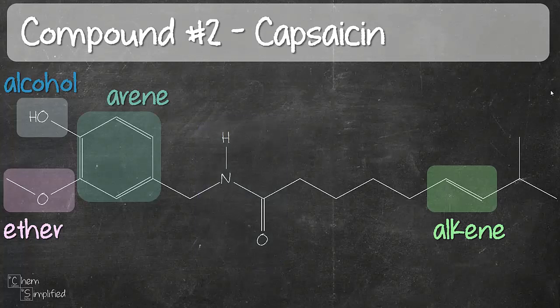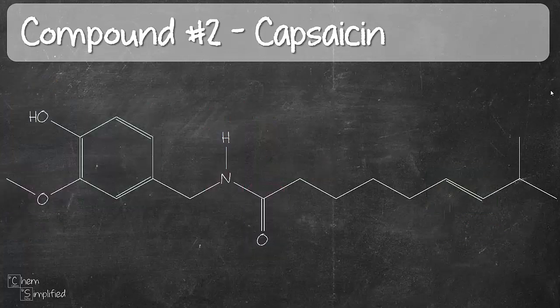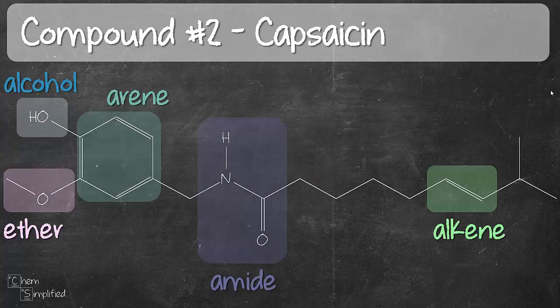Now if you got six groups, this is what you may have done — splitting the amide into NH and C double bond O, calling it amine and ketone. So like I've said with the first compound, if you see these two groups right next to each other, go ahead and group them together. It should be amide. How do you feel? Pretty confident? Now let's move on to our final example.